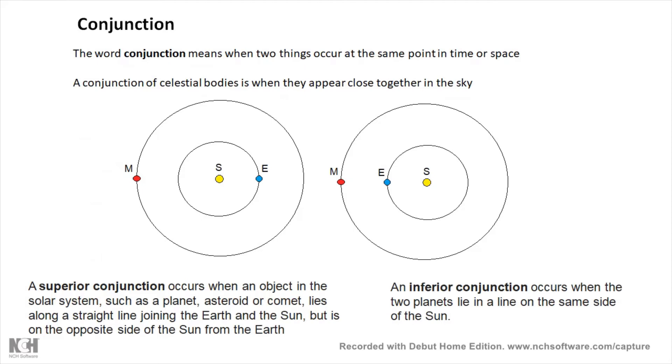Conjunction: well imagine conjoined twins are kind of stuck together. Well a conjunction of celestial objects is when they appear close together in the sky. There are a couple of special conjunctions that we need to know: a superior conjunction and an inferior conjunction. A superior conjunction is when there's a conjunction from Earth's point of view of the Sun and another object, when the Sun and another object are close together in the sky. You won't be able to see the other object because it will be very close to the Sun, but the conjunction is happening nevertheless.